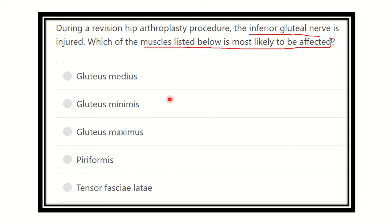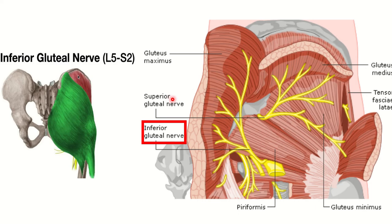We can see a picture, and this picture is more than enough to answer the question. We can see the superior gluteal nerve above the piriformis muscle, and inferior to the piriformis there is the inferior gluteal nerve. We can also see the cut ends of the gluteus maximus muscle.